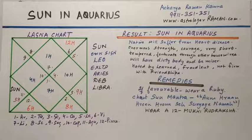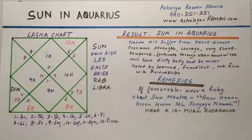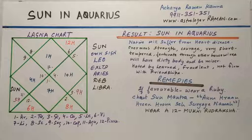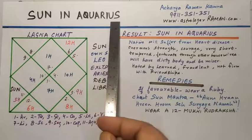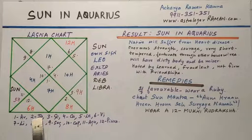Friends, if you like my video then please do comment on it, like it, share it, and also please do subscribe to my channel. So friends let us start our topic — Astrology the easy way — planets in different signs, continuing with Sun in Aquarius.